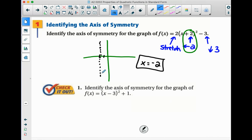That would be this vertical line here, x equals negative 2. Identify the axis of symmetry for the graph. Again, really all we care about is this. That would be shifted to the right one, and that line would be x equals positive 1. That would be our axis of symmetry.